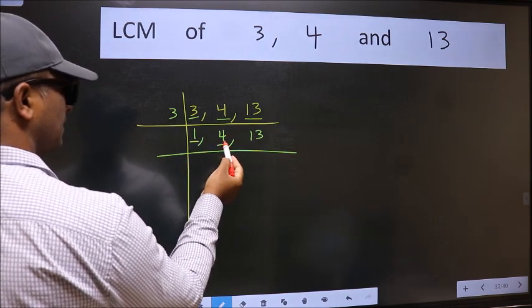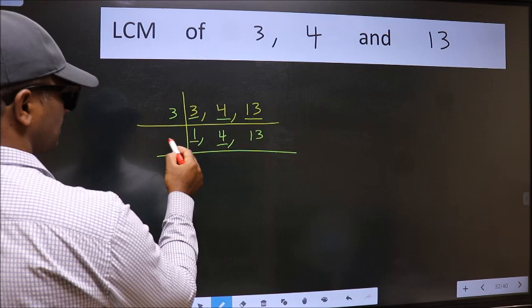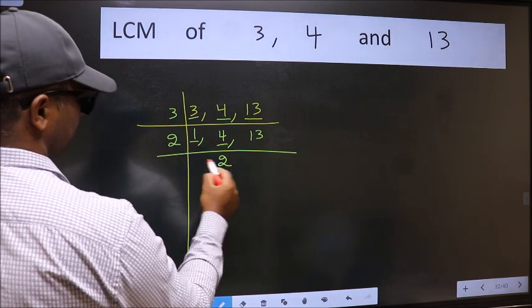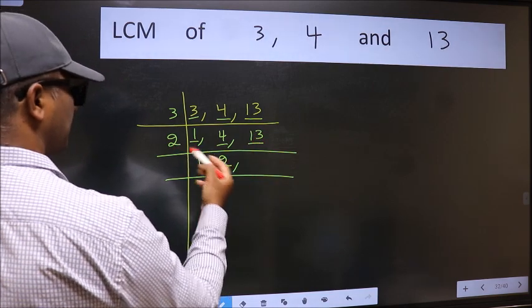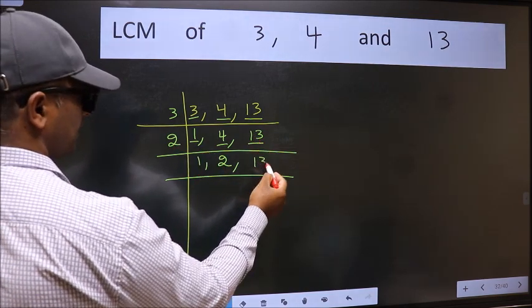So focus on the next number 4. 4 is 2 times 2. The other number 13 not divisible by 2 so we write it down as it is.